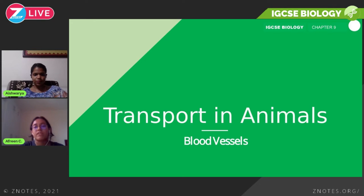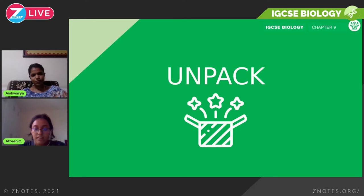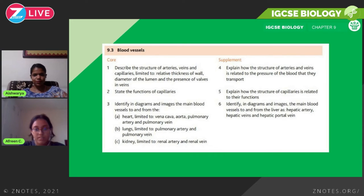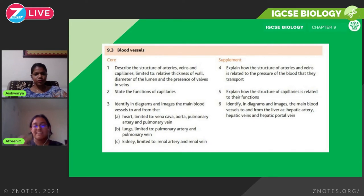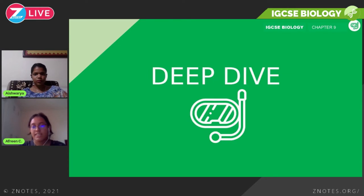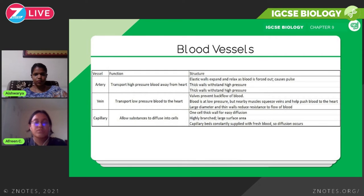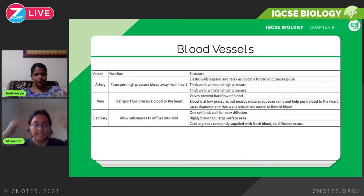Now we look at blood vessels. The syllabus requires you to know that there are three different types of blood vessels in humans — you need to know their functions and know those vessels specific to some organs such as the liver, heart, kidneys, and lungs. The three main blood vessels are the artery, the vein, and the capillary.